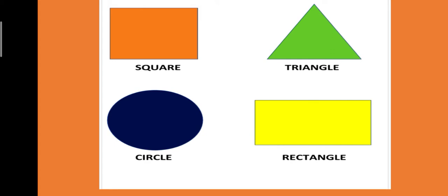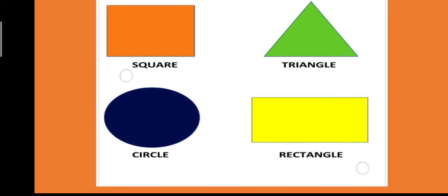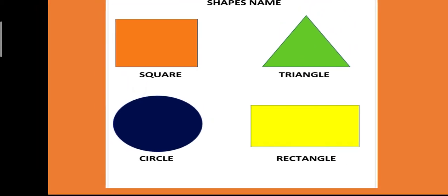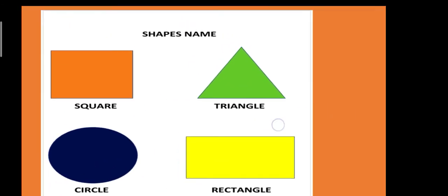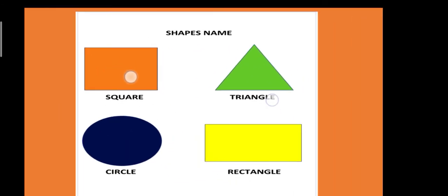And Rectangle. इसके भी चारों कोन समान होते हैं, और इसे हिंदी में आयत कहा जाता है. अब हम देखेंगे next slides में — 3D shapes.